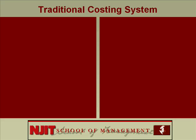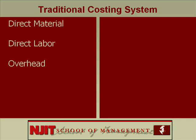For each job, they compute the material, how much labor went into it, and overhead, then total it up. For direct material, they use actual cost — that's the actual material used in the job. For direct labor, they use actual cost — that is, what was actually paid to the workers. Overhead is estimated.